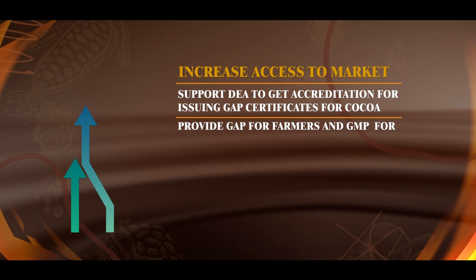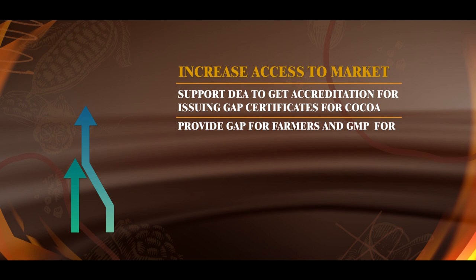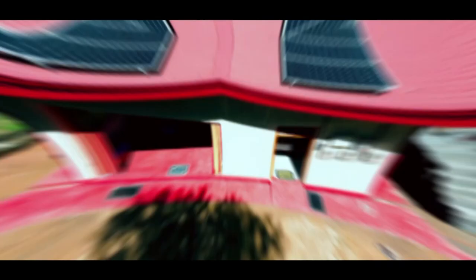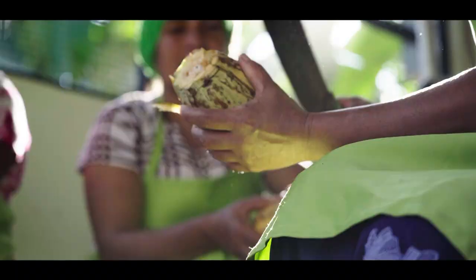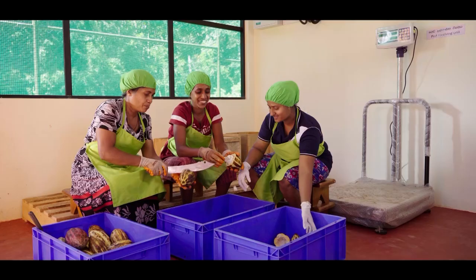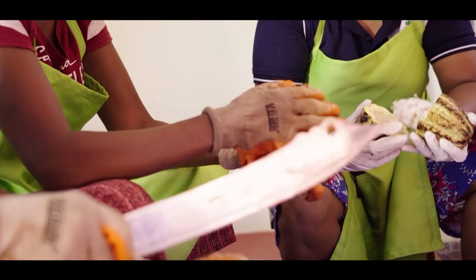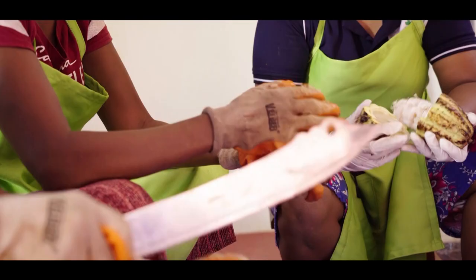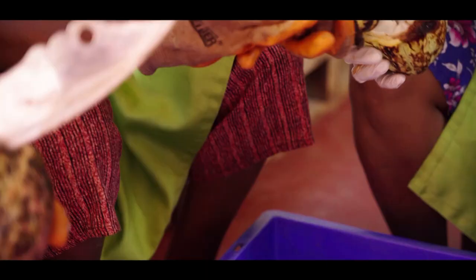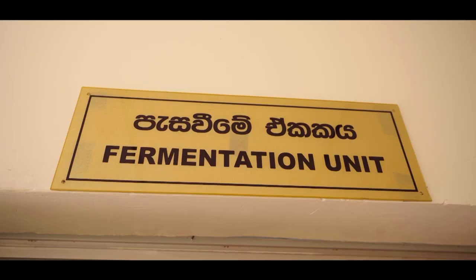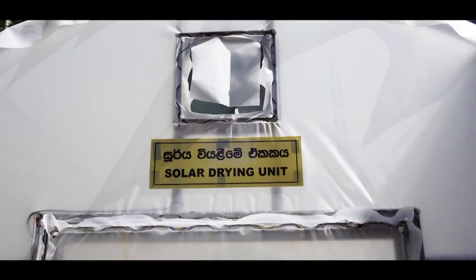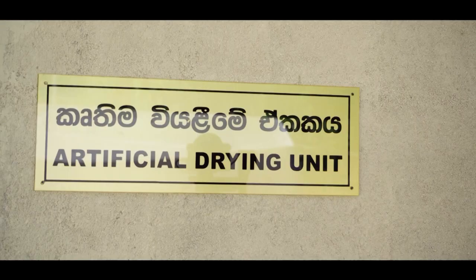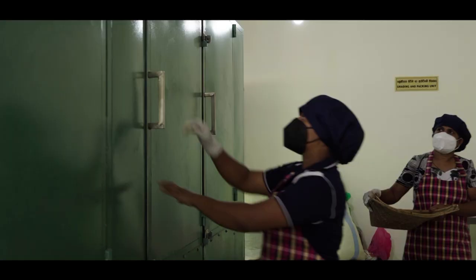The project established self-processing units to produce high-quality fermented cocoa beans at the household level. Two cocoa processing centres — one in Madagama Karamatia and the other in Badal-Kumura-Meegayaya — were built and handed over to the farmer societies, which now manage them. These centres were equipped with all necessary equipment for processing cocoa to achieve its best quality, and centre staff were given training and knowledge.